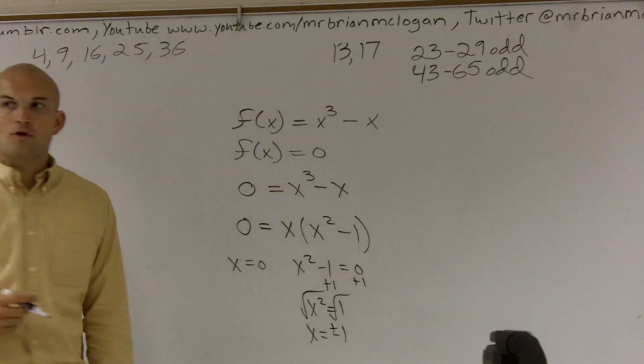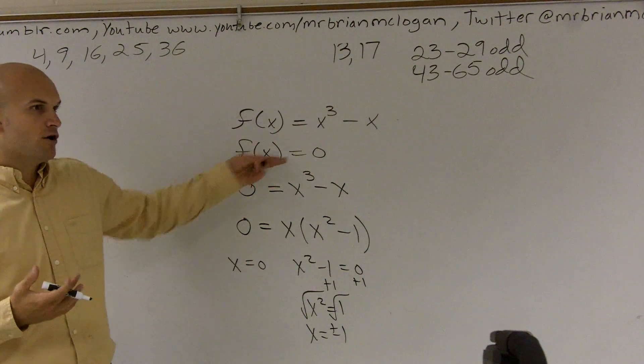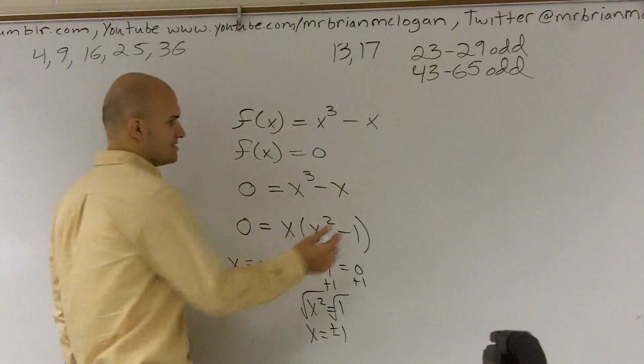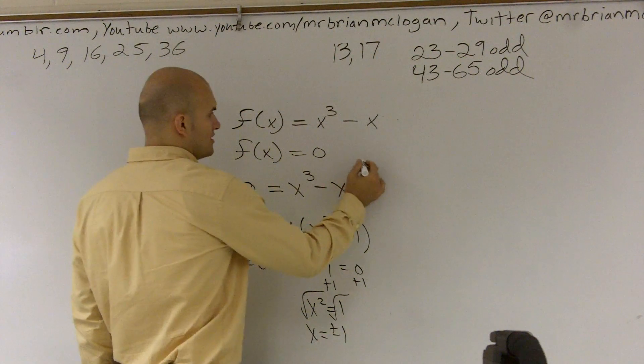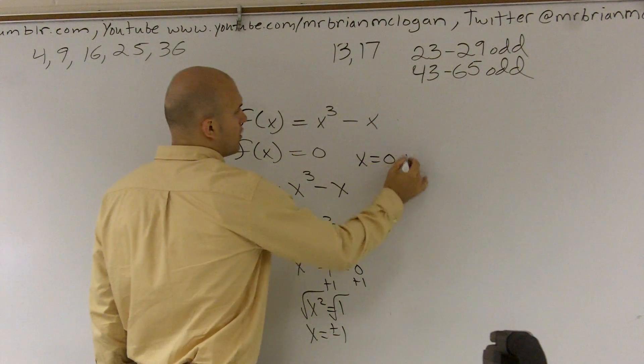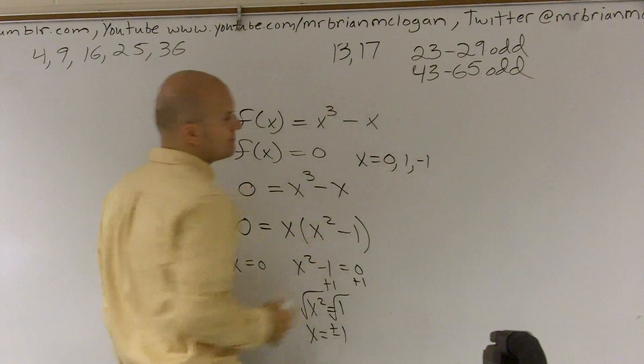So therefore, all of the values that make my function 0 are going to be x equals 0, 1, and negative 1.